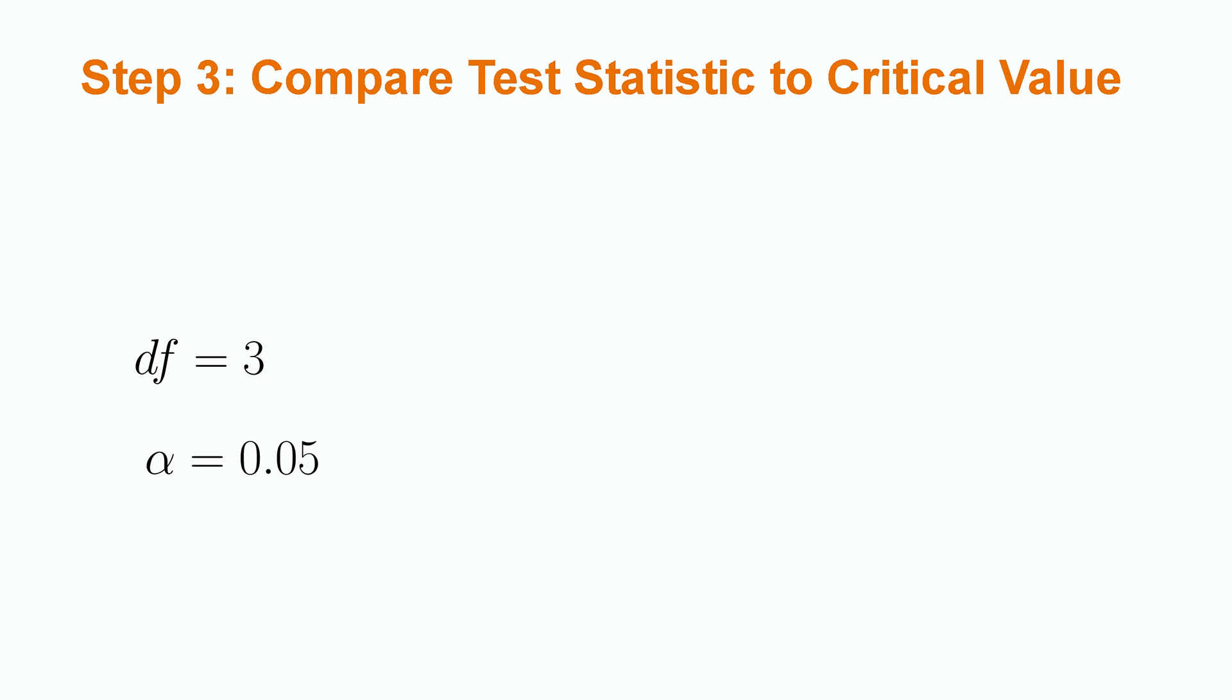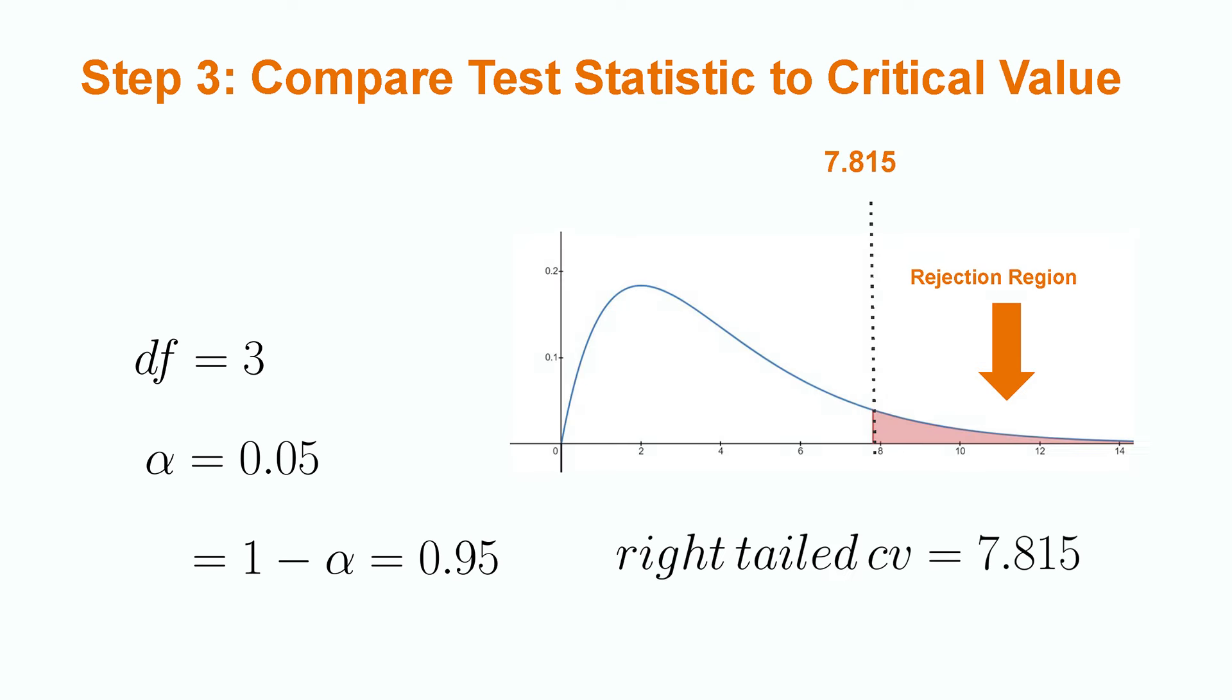Chi-square goodness-of-fit tests are right-tailed and we obtain the value of a right-tailed critical value by calculating the value of 1 minus alpha. Using the correct degrees of freedom and alpha, we obtain a right-tailed critical value of 7.815.